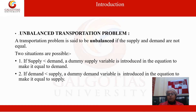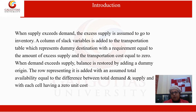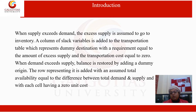This is how we construct a dummy column in the case of an unbalanced transportation problem. When supply exceeds demand, the excess supply is assumed to go to inventory, and a column of slack variable is added to the transportation table. This represents a dummy destination with a requirement equal to the amount of excess supply, and the transportation cost is set to zero. When demand exceeds supply, balance is restored by adding a dummy origin with availability equal to the difference between total demand and total supply, with each cell having zero unit cost.